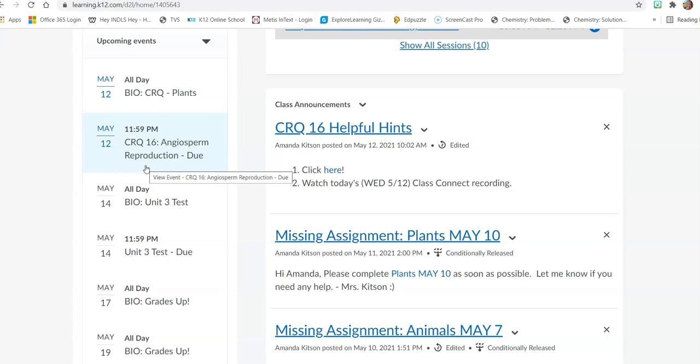And you have to do a couple of things in your CRQ. You're going to have to label the parts of a flower and then write a CRQ, a paragraph about the reproductive parts of the flower.